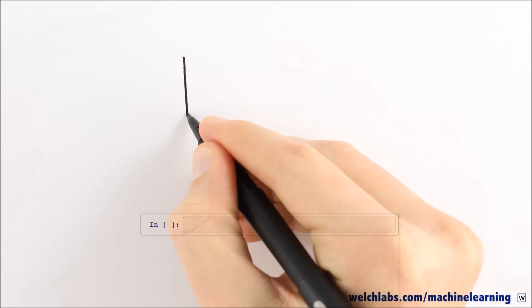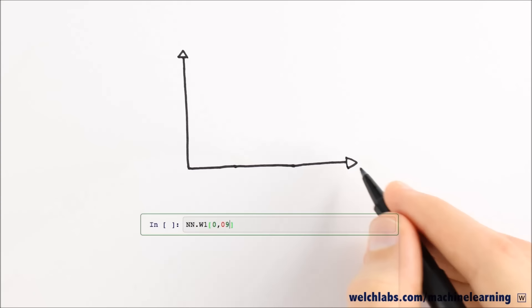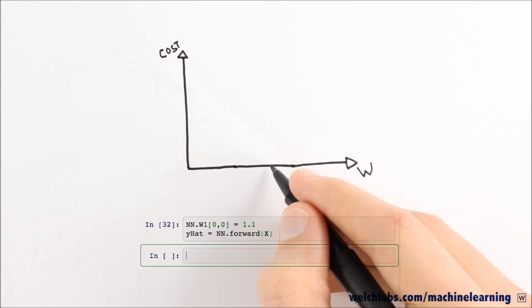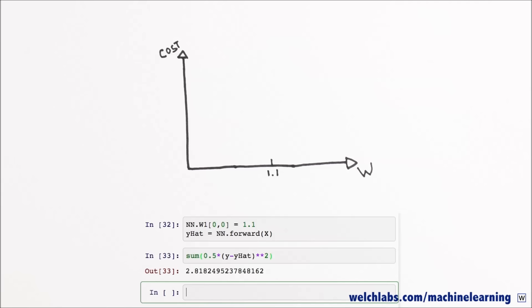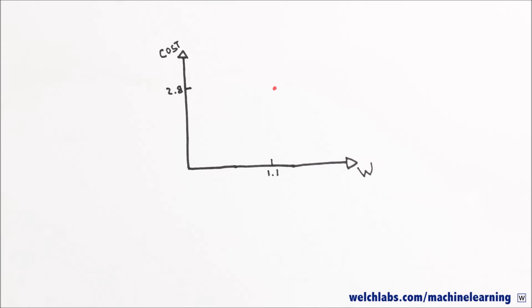Let's return to the one dimensional case and see if we can be more clever. Let's evaluate our cost function for a specific value of w. If w is 1.1 for example, we can run our cost function and see that j is 2.8. We haven't learned much yet, but let's try to add a little more information to what we already know.